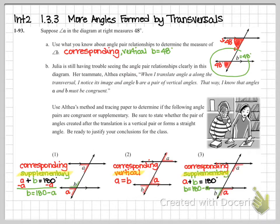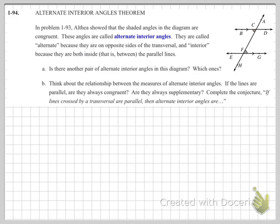Taking a look at problem three: I slid my way around the shape using corresponding angles — you could also slide B up the transversal. I slid A down using corresponding, and then A and B together make a straight line. So the relationship in problems one and three both give us supplementary, whereas problem two gives us vertical angles, therefore congruent.